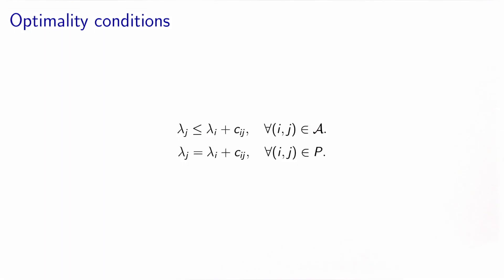If you remember, the optimality conditions are based on the labels. They say that for each arc in the network, the label of node j must be less or equal to the label of node i plus the cost of the arc. And for all arcs in the shortest-path, you need to have the equality.